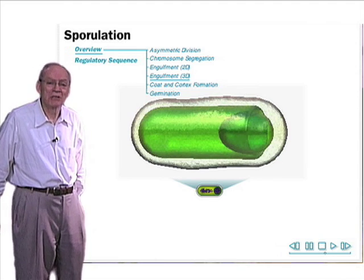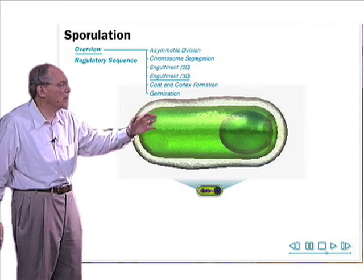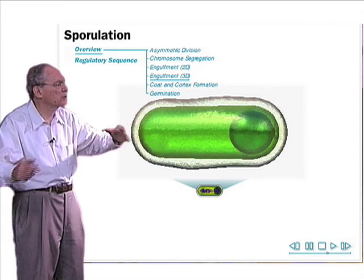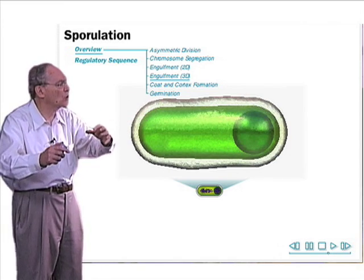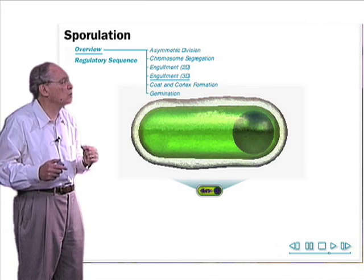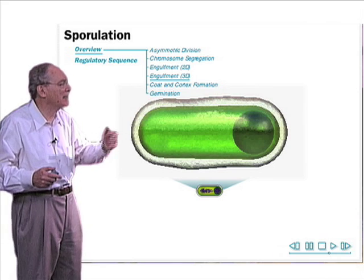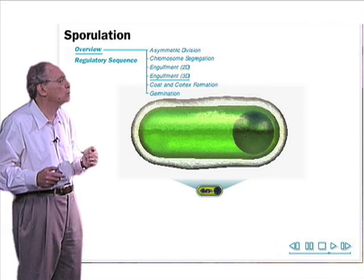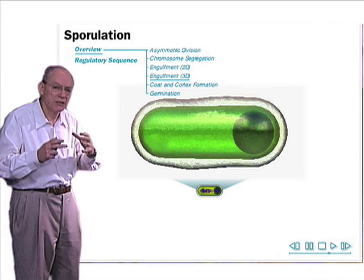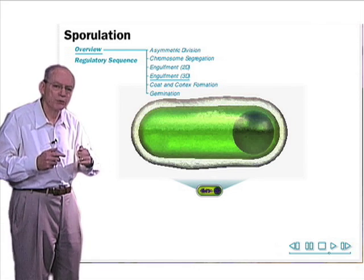In the next stage of development, the mother cell membrane migrates around the four-spore to fully engulf it and pinch it off as a free cell within a cell. So now, the process of sporulation is well underway, and that inner cell will mature into a spore. This conversion of that inner cell into a spore involves three principal morphogenetic processes.